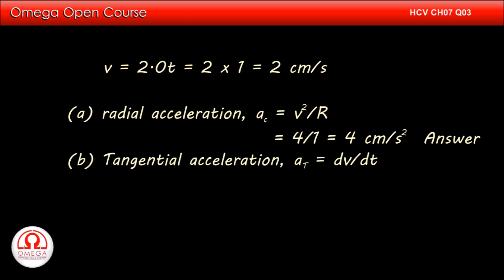Tangential acceleration is given by dv/dt. Differentiating velocity with respect to time, we get acceleration equals 2 cm per second squared. This is the answer to part b of the question.